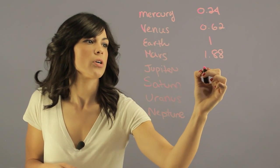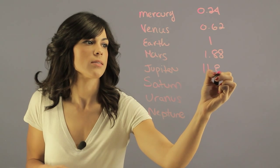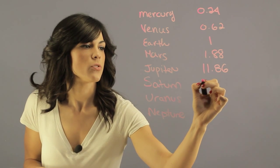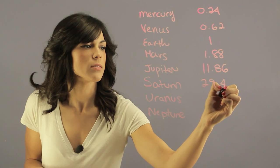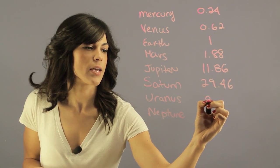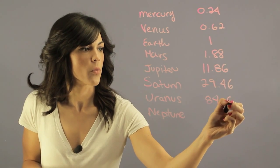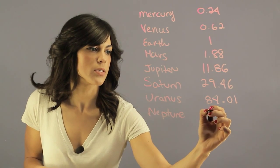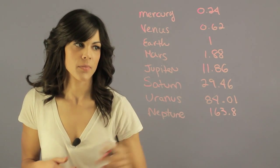For Jupiter it's 11.86. For Saturn it's 29.46. For Uranus it's 84.01 and for Neptune it's 163.8.